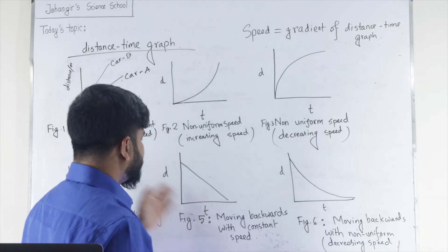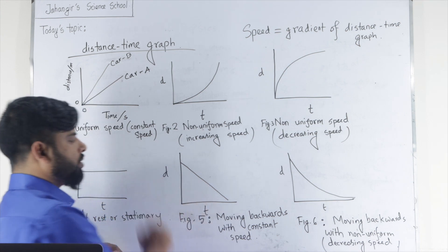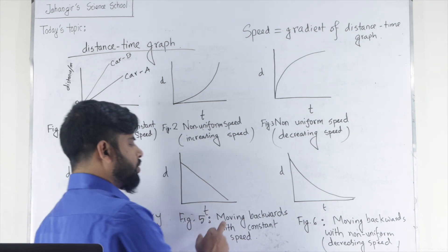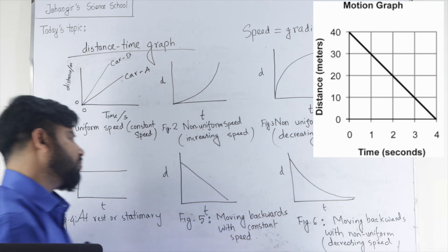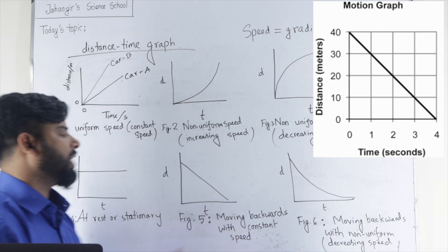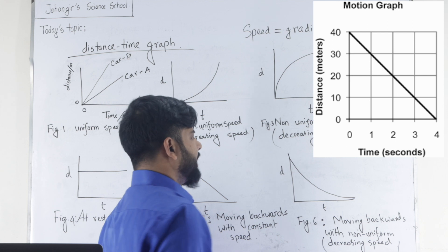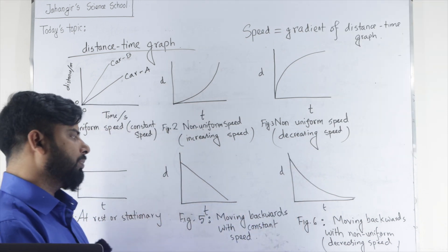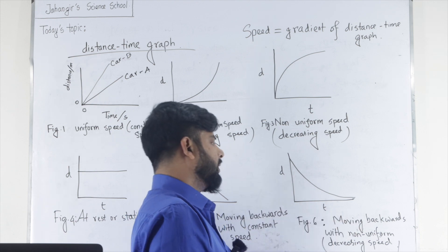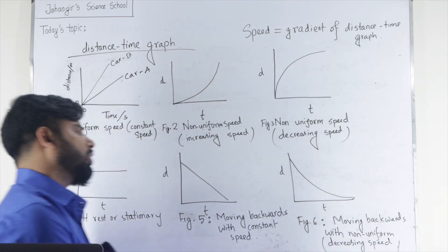If the distance time graph has downward slope, then it shows it moving backward with constant speed, because it is a straight line. On the other hand, if the distance time graph is a downward slope, but it is a curved one, then moving backward with non-uniform speed.